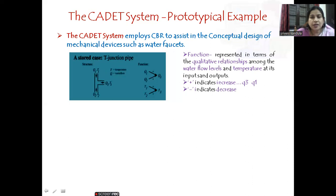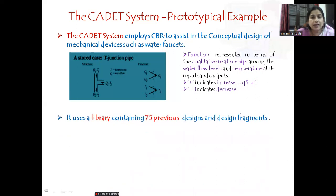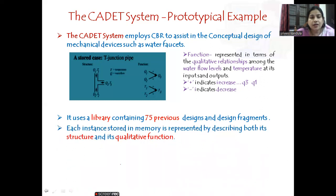The function is represented in terms of qualitative relationships among water flow and temperature, given as inputs and outputs. Plus indicates increase and minus indicates decrease. The CADET system contains a library which has 75 previous designs. Each instance stored in memory is represented by describing both its structure and its qualitative function. Here we are seeing only one example — totally 75 examples are already stored, each with a structure as well as an associated function.